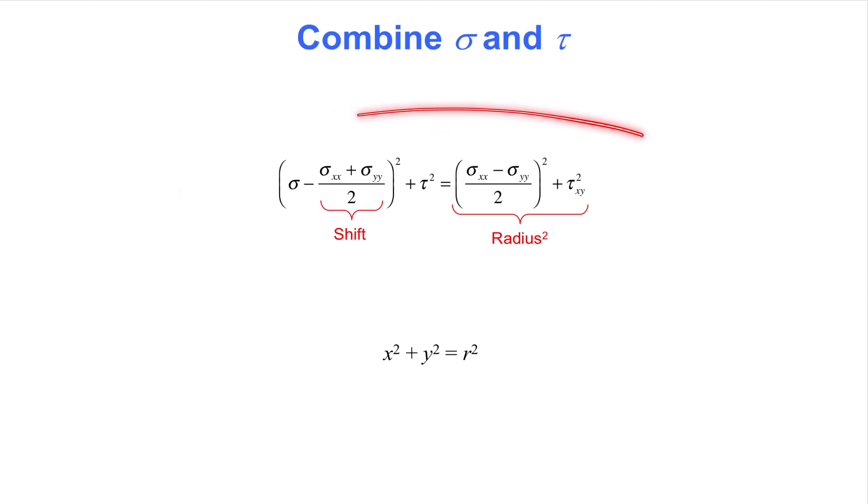If we compare this results with the generic expression for a circle, shown below, we see that the stress transformation equations from the previous slide expresses a circle. The circle is formed in a plane laid out by the axes sigma and tau. The radius and shift of the center of the circle are identified in red.